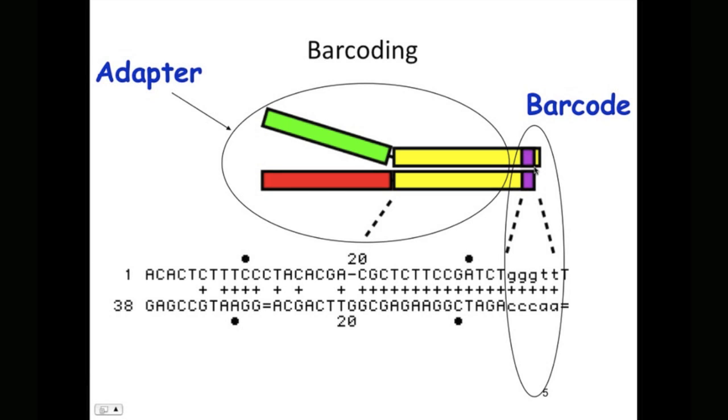You pool the libraries and sequence them together, and then you separate out these different libraries by the barcodes when you do analysis.